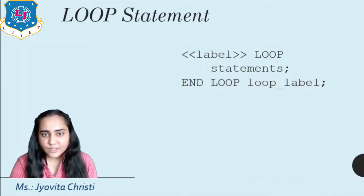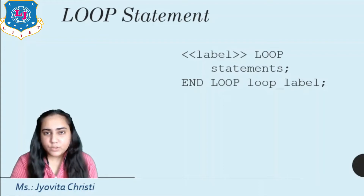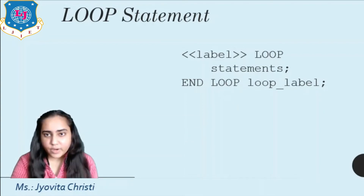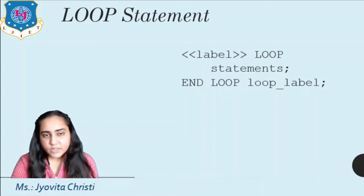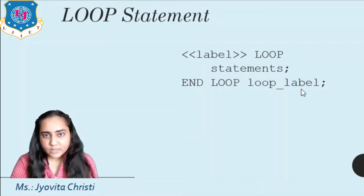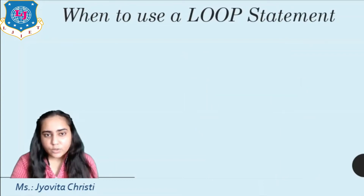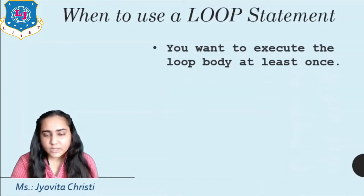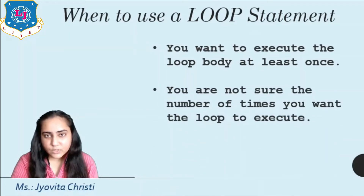The loop statement executes the statements in its body and then returns control to the top of the loop. Typically the body of the loop contains at least one exit or exit when statement for terminating the loop, otherwise the loop becomes infinite. The loop statement can have an optional label at the beginning and end. It is good practice to use the loop statement when you want to execute the loop body at least once and you are not sure how many times you want to execute the loop.